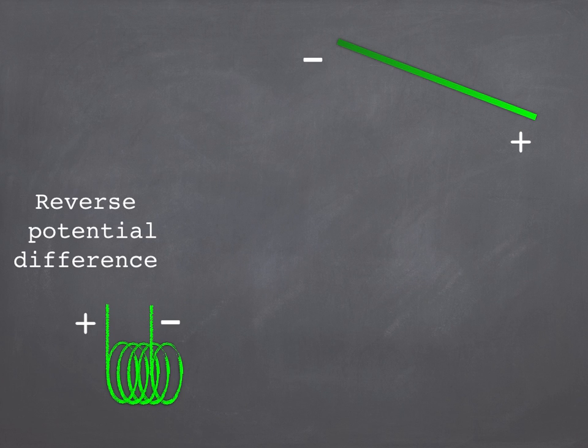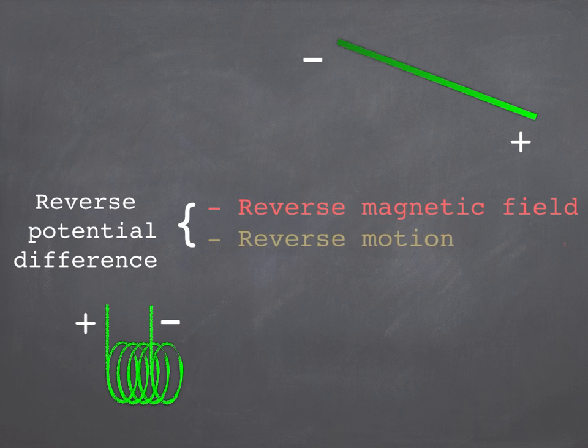Either you reverse the magnetic field so you basically turn the magnet around, or you move the conductor the opposite way through the field. And either of those will reverse the potential difference. If you do both at the same time though, the two effects cancel each other out and the potential difference stays the same way around. So you can only change one at a time.